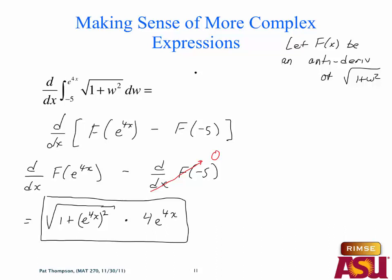Do you see it? This is an accumulation function — we're taking the derivative of an accumulation function that resets at negative 5 at this rate, but up until e to the 4x, not up until x. So this is the derivative of that accumulation function. This stuff is on the final exam, but not tomorrow.